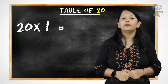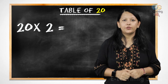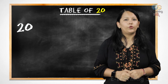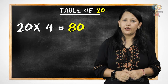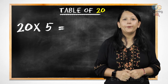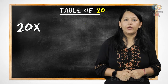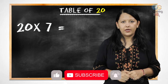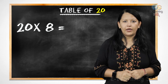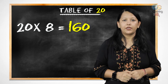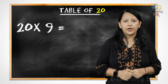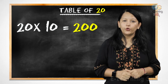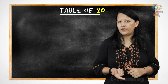2 1's are 20, 2 2's are 40, 2 3's are 60, 2 4's are 80, 2 5's are 100, 2 6's are 120, 2 7's are 140, 2 8's are 160, 2 9's are 180, 20 10's are 200.